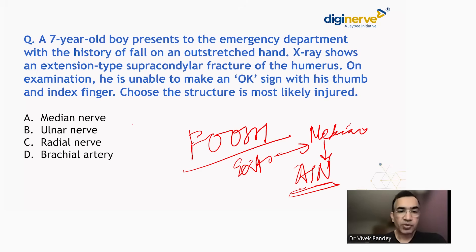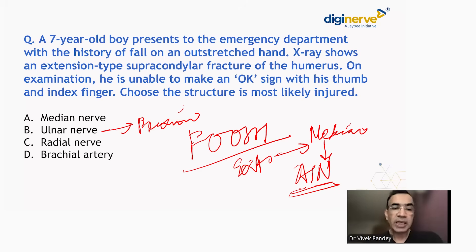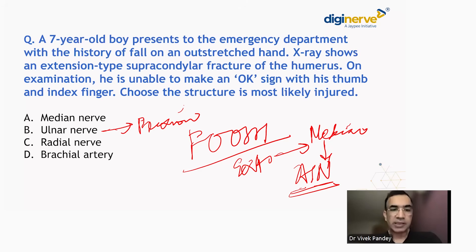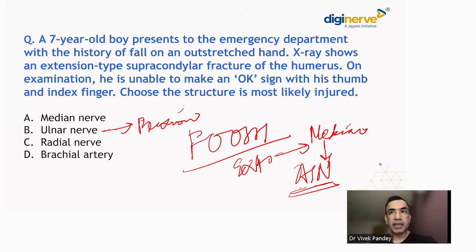Ulnar nerve injury is usually seen in the flexion type of supracondylar fracture. Brachial artery has nothing to do with the OK sign — the OK sign is purely a neurological sign. Radial nerve can also be paralyzed in these injuries but is not related to the OK sign.